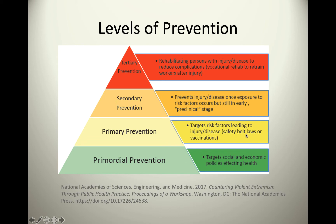Safety belt laws and vaccinations are examples. You could still get injured in a car crash while wearing a safety belt, but it prevents more serious injuries. And yes, you could still get a disease even after being vaccinated, but the risk drops significantly — from 100% to maybe only a 5% chance. That is primary prevention.